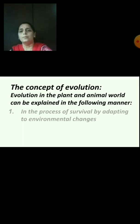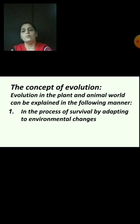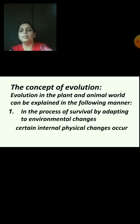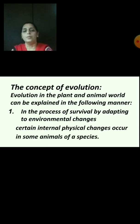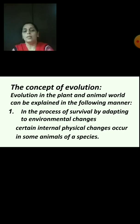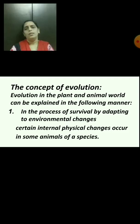Evolution in the plant and animal world can be explained as follows. First, in the process of survival by adapting to environmental changes, certain internal physical changes occur in some animals of a species. Here, 'species' means a group of plants or animals that are very similar to each other.